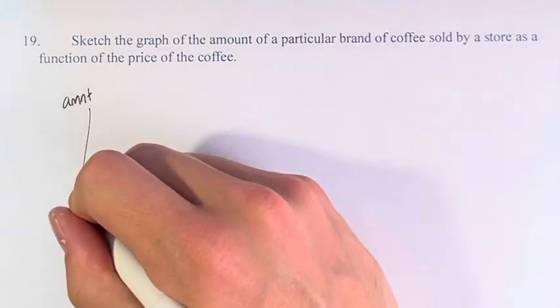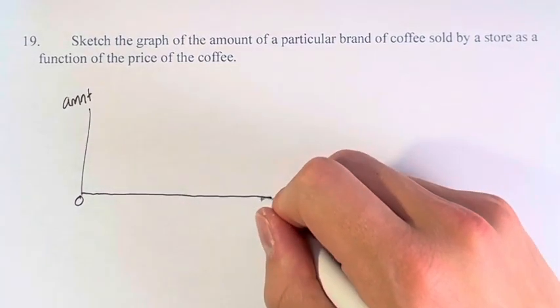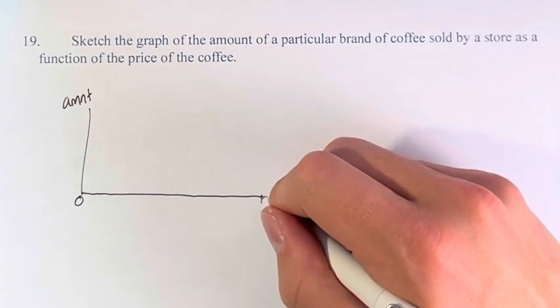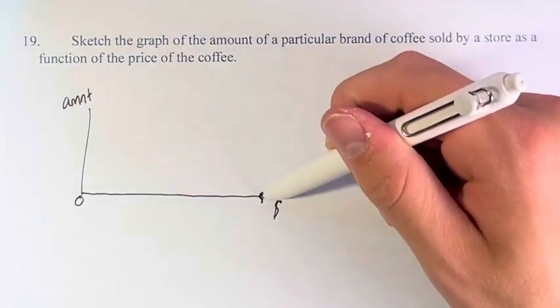So we're going to go from let's say zero, they're selling the coffee for free, up to some maximum value at which nobody's buying the coffee anymore. If we're selling coffee for $10,000 nobody's gonna buy it, so at some point we're gonna hit zero.